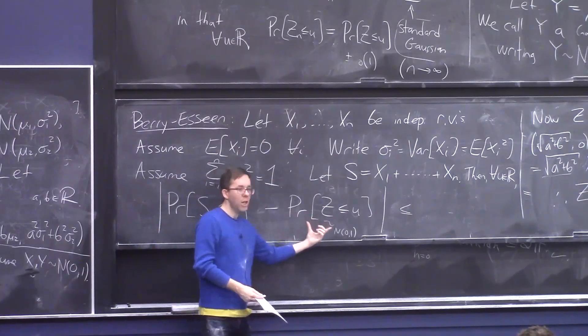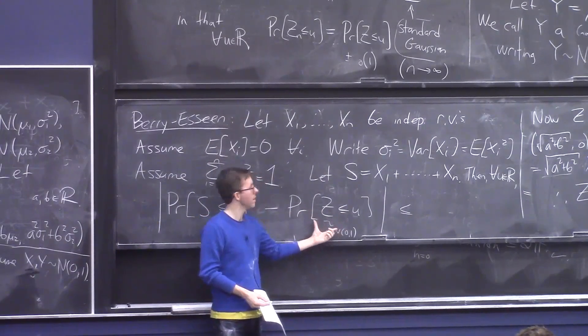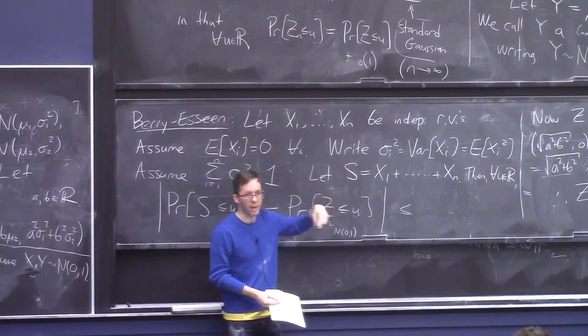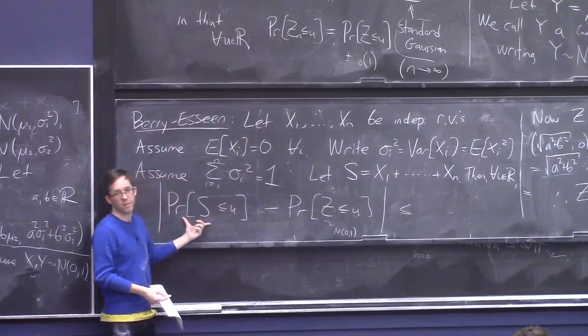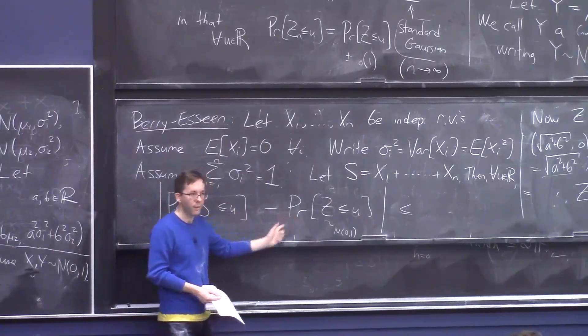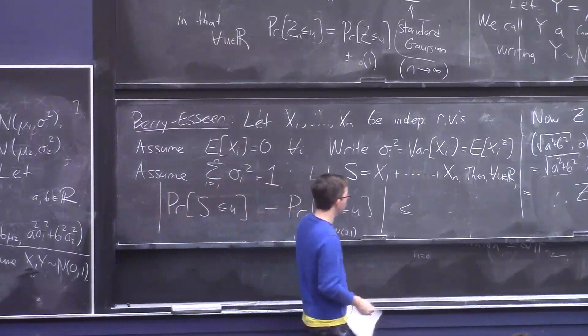And what you should think of is, by the way, you should think of this as, like, a known quantity. For every number u, you're like, okay, this is just the probability that a Gaussian is at most u. It's some explicit number that I can ask my computer to figure out. And then you can be like, ha-ha, this quantity is basically the same as that quantity.